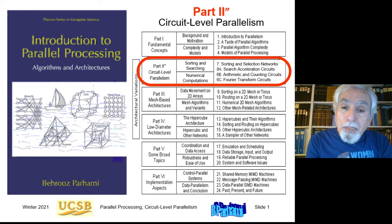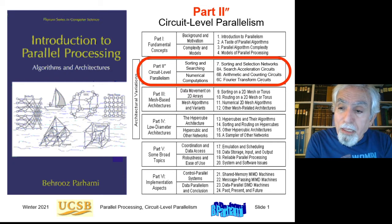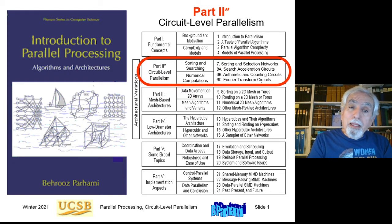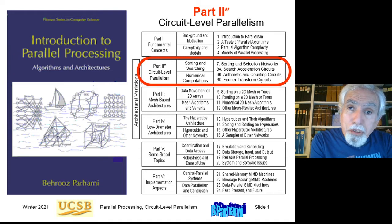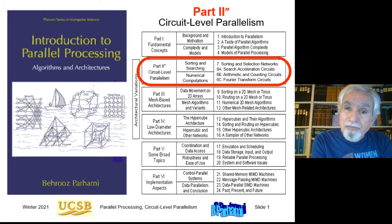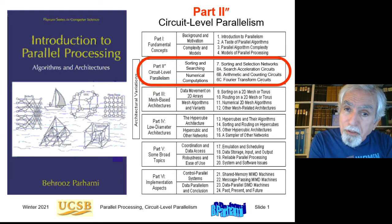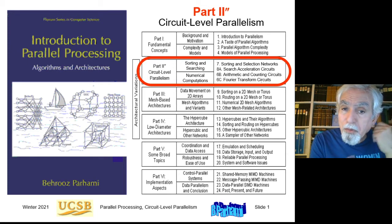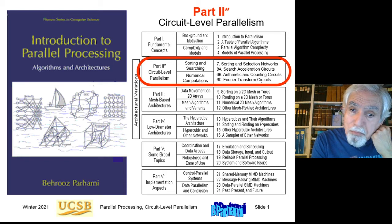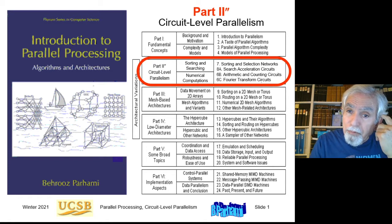Hello and welcome to lecture 7 for the graduate course ECE 254b Parallel Processing. With this lecture we start part 2 prime in the textbook. This is basically the second half of the current part 2 in the textbook expanded to include additional material. The four chapters in part 2 prime deal with the circuit model of parallel computing, and as we did for the previous two parts, we will devote three lectures to this part.